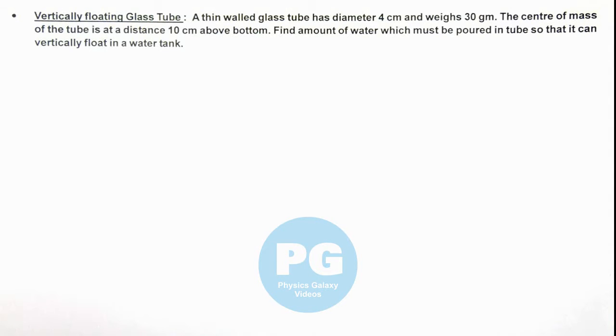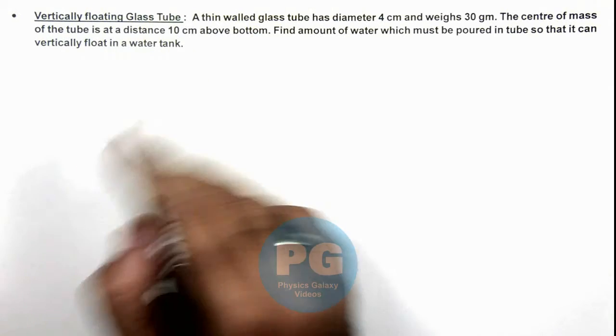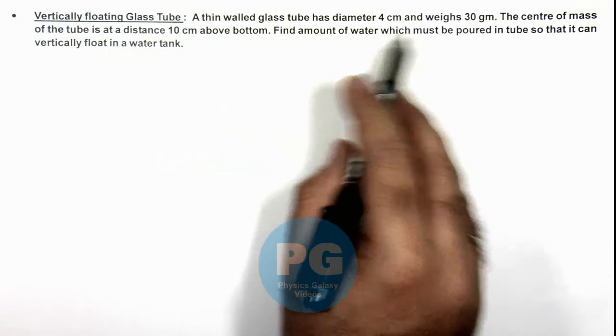In this illustration we'll analyze a vertically floating glass tube. We are given that a thin-walled glass tube has diameter of 4 centimeter and weighs 30 gram.